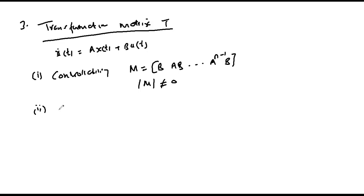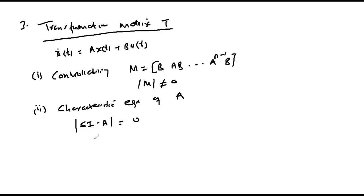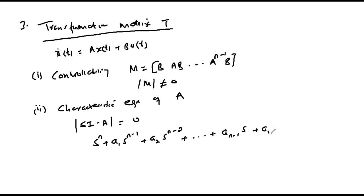Step two: we determine the characteristic equation of matrix A, that is det(sI − A), which gives a polynomial in s of order n: sⁿ + a₁sⁿ⁻¹ + a₂sⁿ⁻² + ... + aₙ₋₁s + aₙ = 0. We obtain the coefficients aᵢ from this characteristic equation — call this equation one.